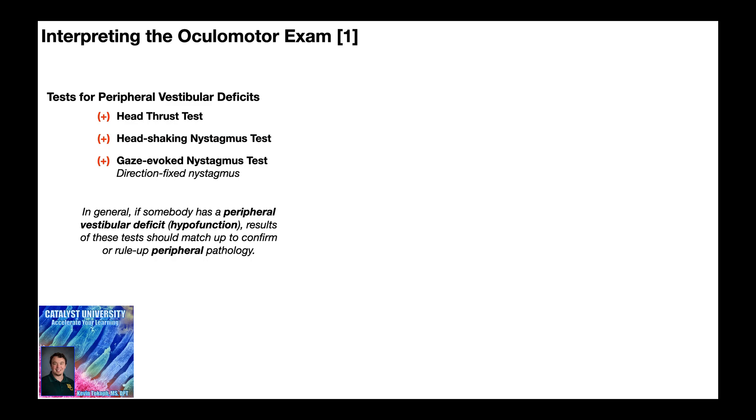So they should match up with each other, and they should also indicate the hypofunction on the same side. So it wouldn't make sense if your head thrust test indicated a right hypofunction, but maybe the other two indicated a left. They should match up in terms of being positive or negative, and if they're positive, they should also match up with the same side. So all right-sided or all left-sided, or in the rare case if they're both, all both.